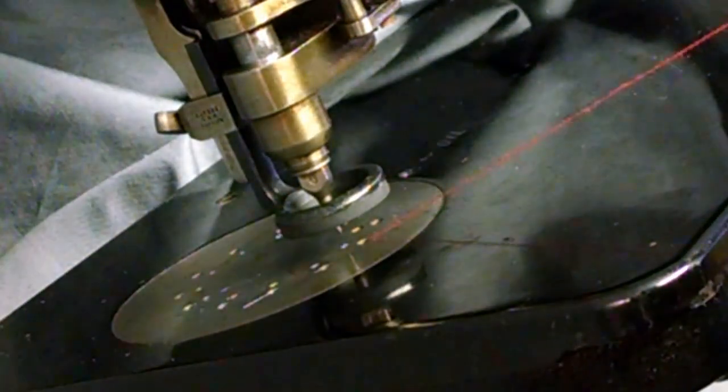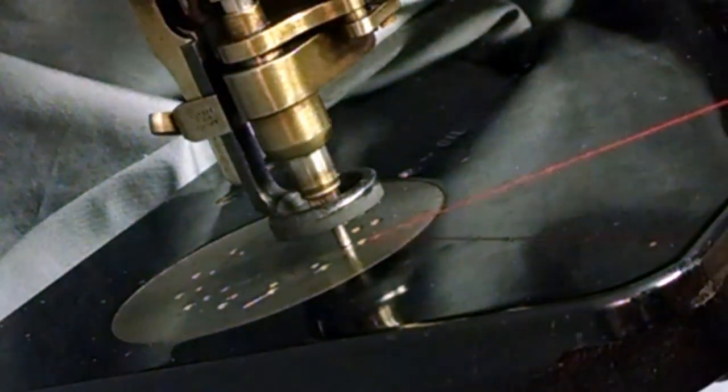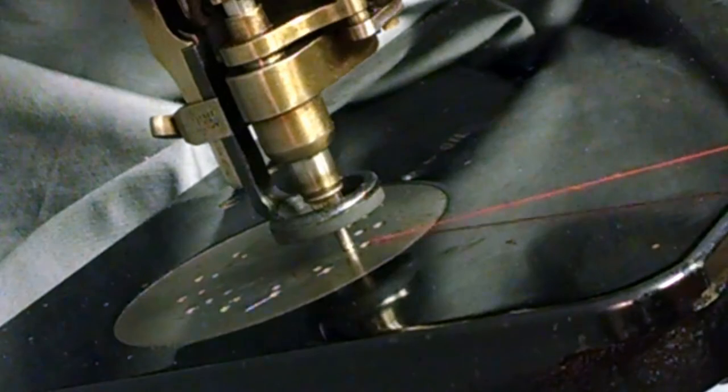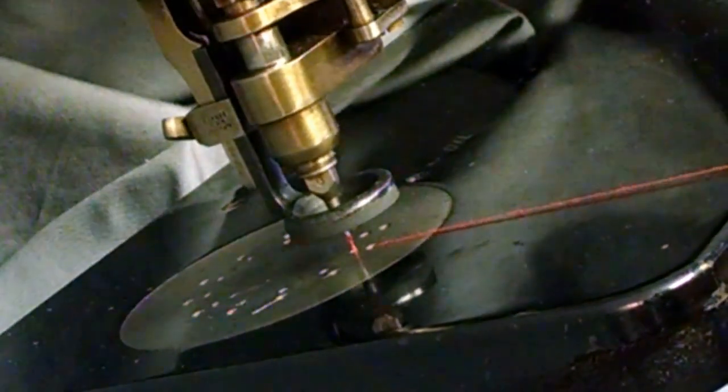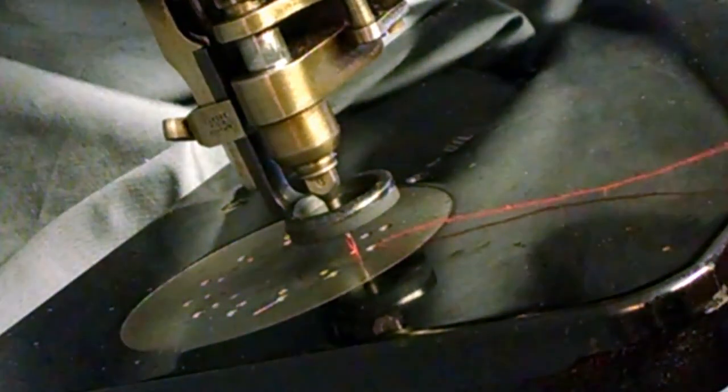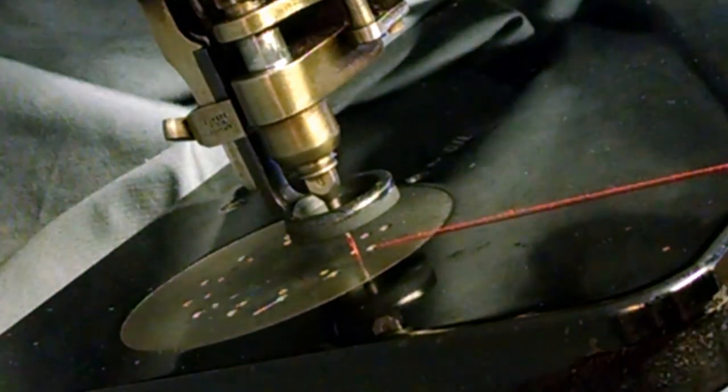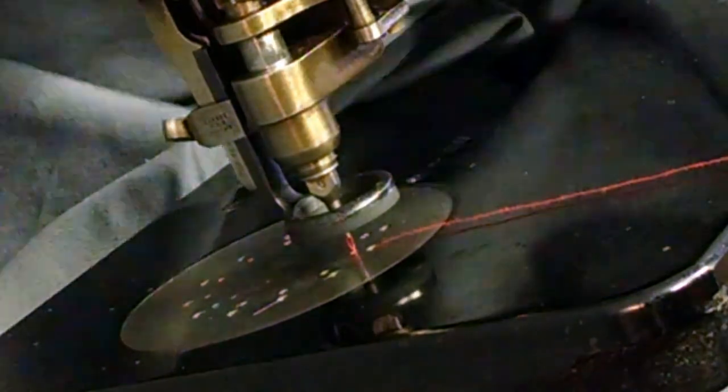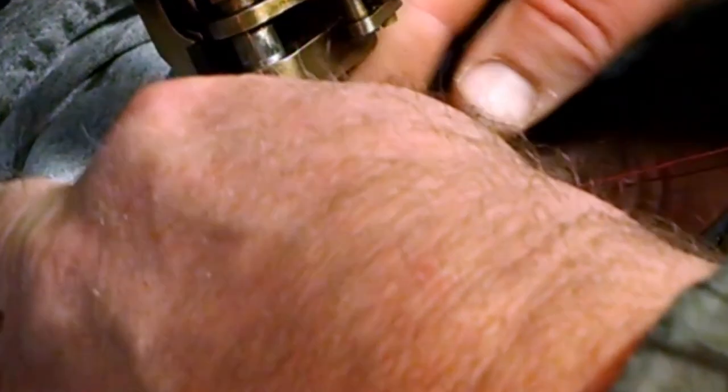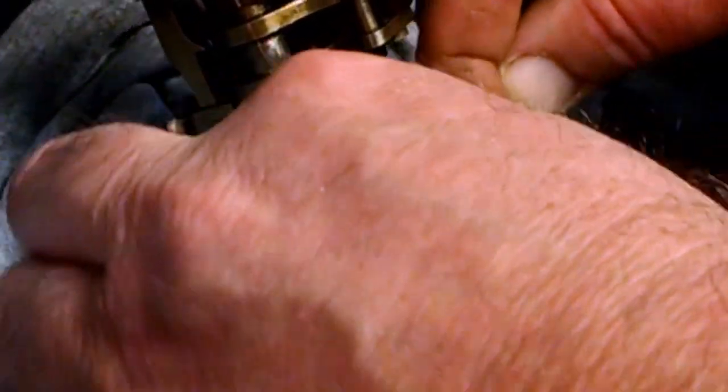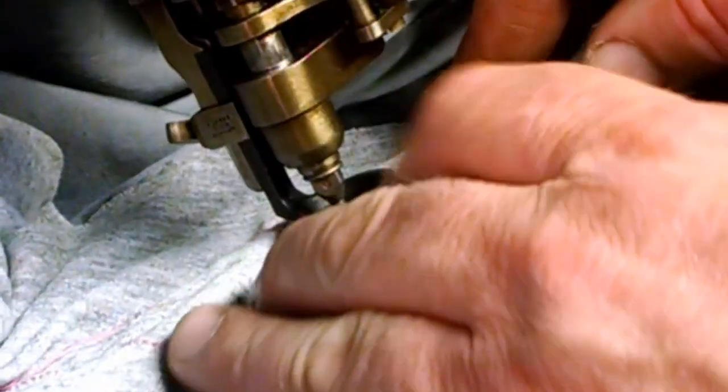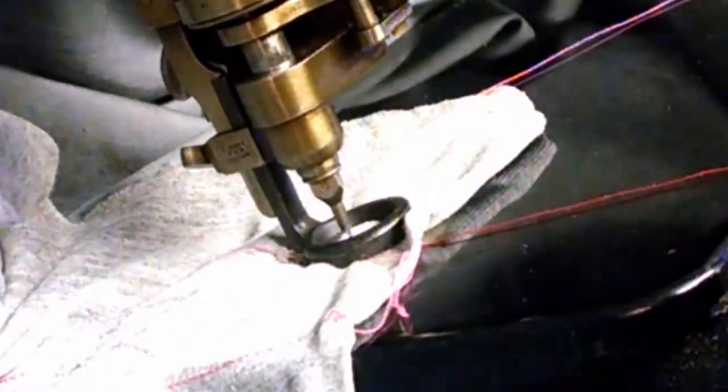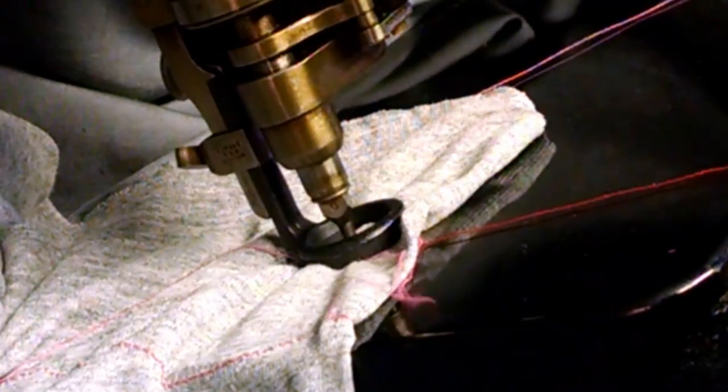So now you hold your thread forward and then cycle the machine, pulling the balance wheel towards you. And you can see we hooked our thread and then from there it would just be a matter of sliding our fabric under, putting the compressor foot down, and then we're good to go.